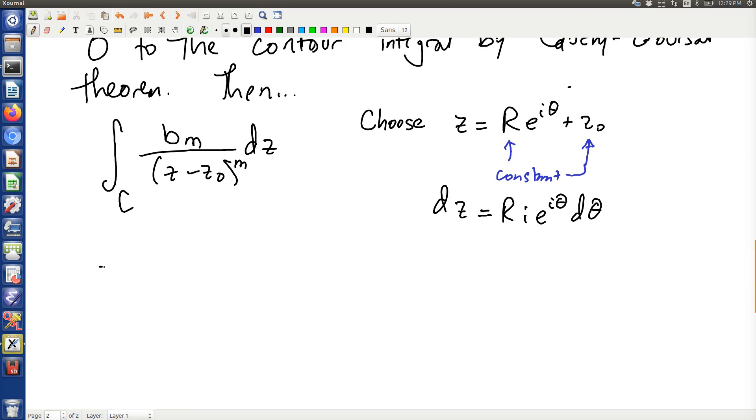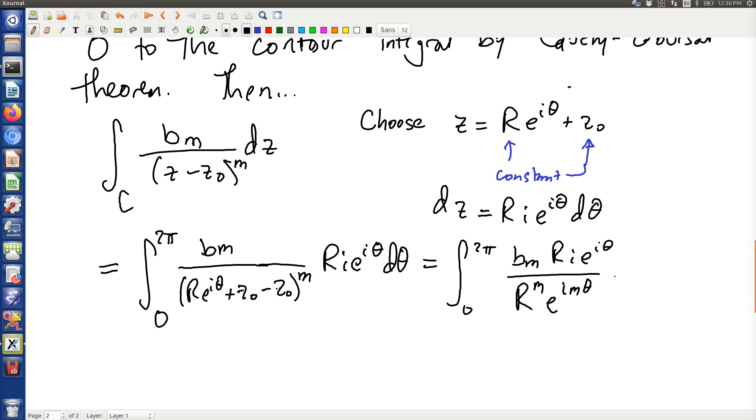Our integral then, when we parameterize it this way, will be 0 to 2π, bₘ over (r e^(iθ) plus z₀ minus z₀)^m times r i e^(iθ) dθ. A little bit of simplification. You'll notice the z₀ cancel, and the denominator turns into r^m e^(imθ).